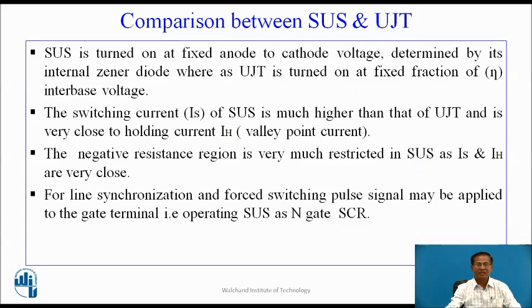Comparison between SUS and UJT: SUS is turned on at fixed anode-to-cathode voltage determined by its internal zener diode, whereas UJT is turned on at fixed fraction of eta interbase voltage. The switching current IS of SUS is much higher than that of UJT and is very close to holding current IH that is the valley point current. The negative resistance region is very much restricted in SUS as switching current and holding current are very close. For line synchronization and forced switching, pulse signal may be applied to the gate terminal signal that is operating SUS as N gate SCR.